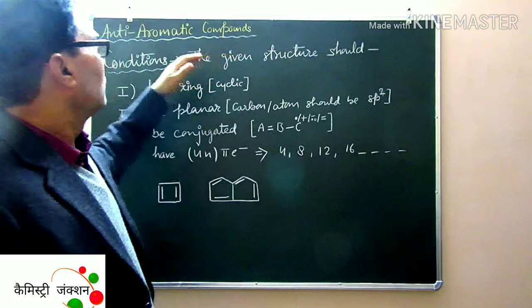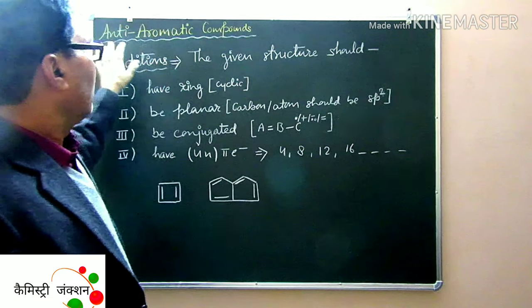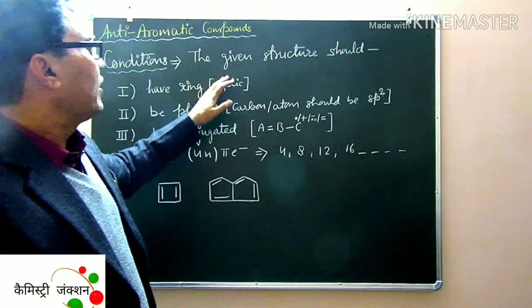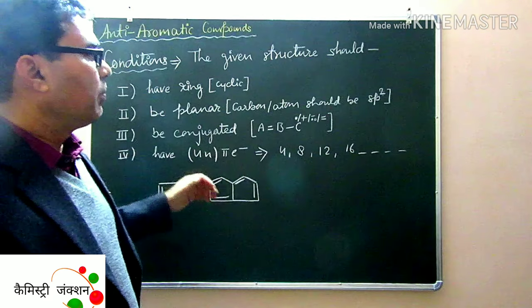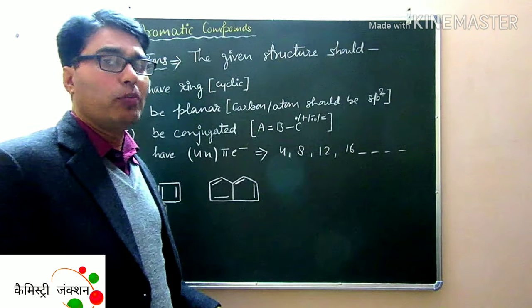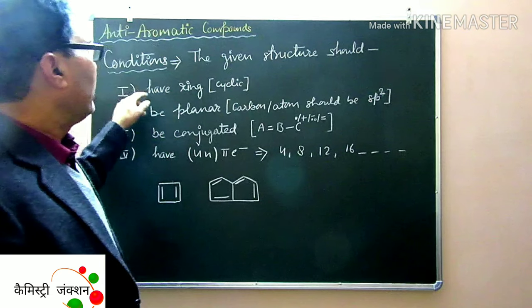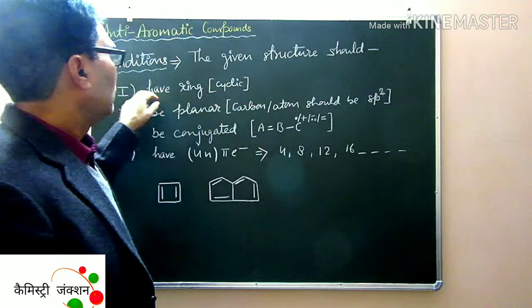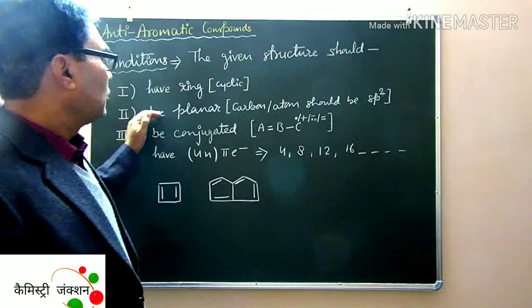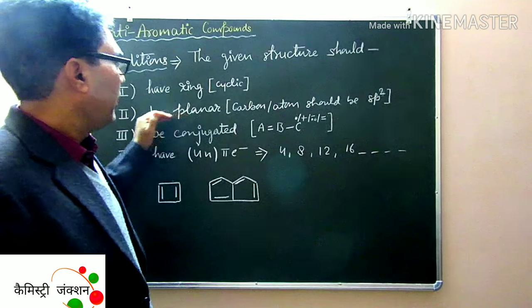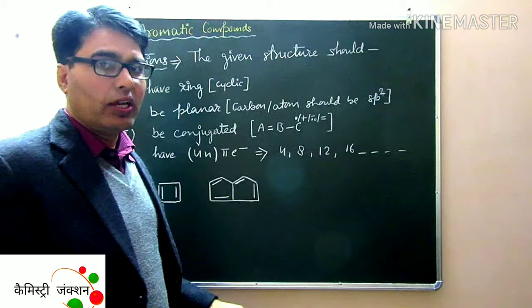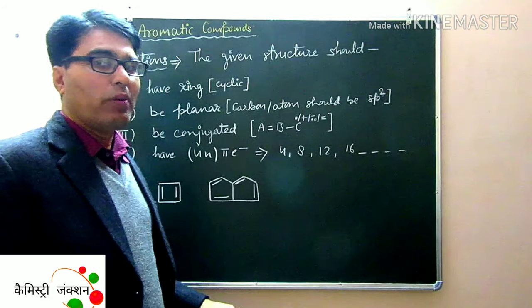Here are four conditions for a compound to be anti-aromatic. The first condition is that the given structure of the compound should have a ring. The second condition is that the structure of the compound should be planar in nature, meaning all the atoms should be sp2 hybridized.